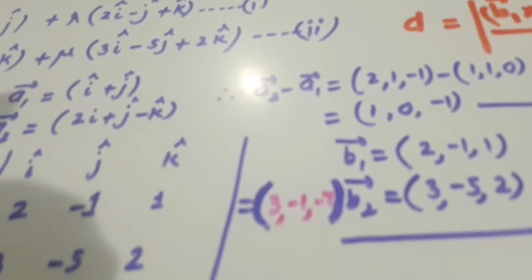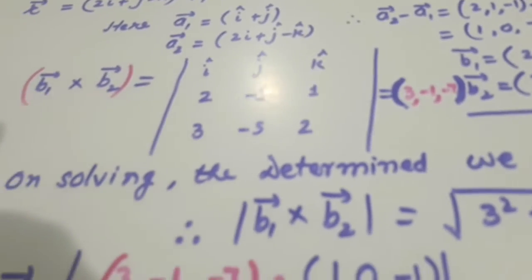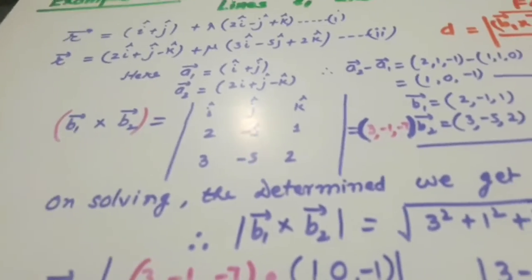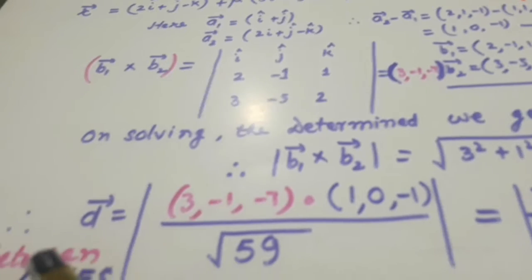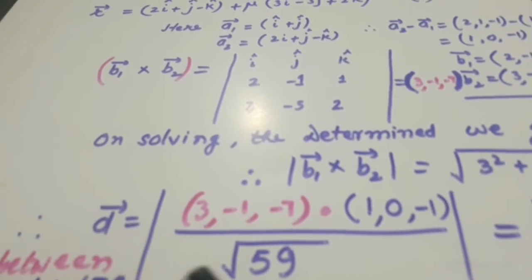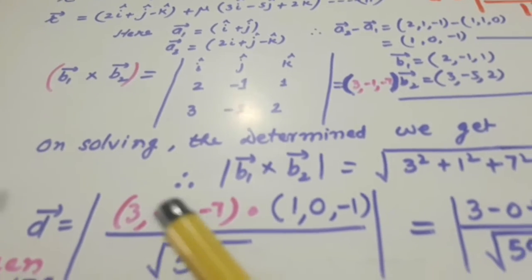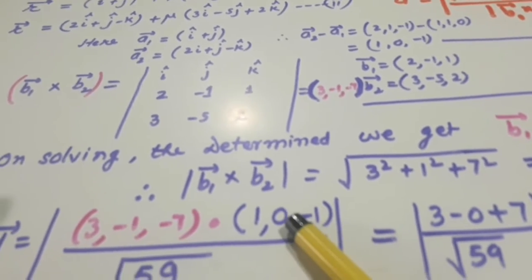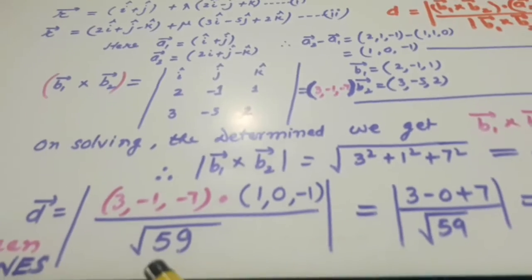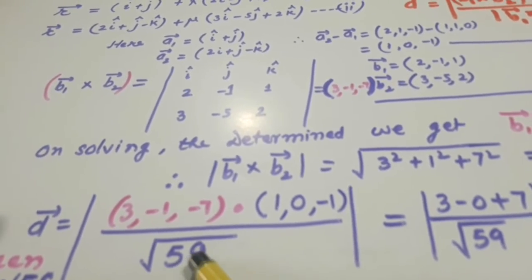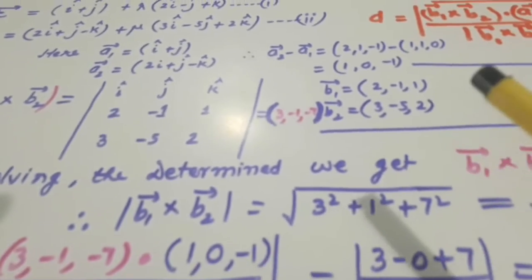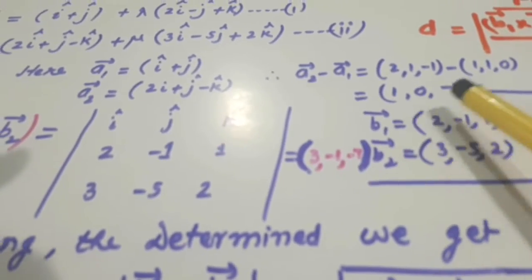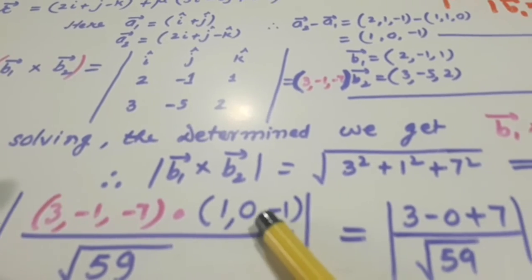So what we will be doing, we will be substituting in the formula. And the formula, I have told you that shortest distance D equals B1 cross B2 dot A2 minus A1 divided by magnitude of B1 cross B2. So here I have calculated this is A2 minus A1, this is 1, 0, minus 1. This is B1 cross B2.